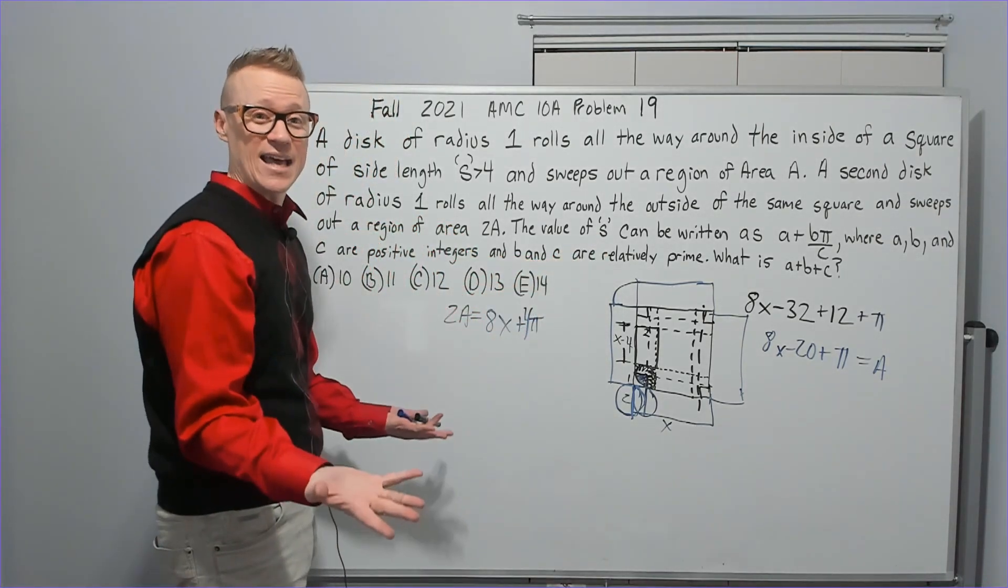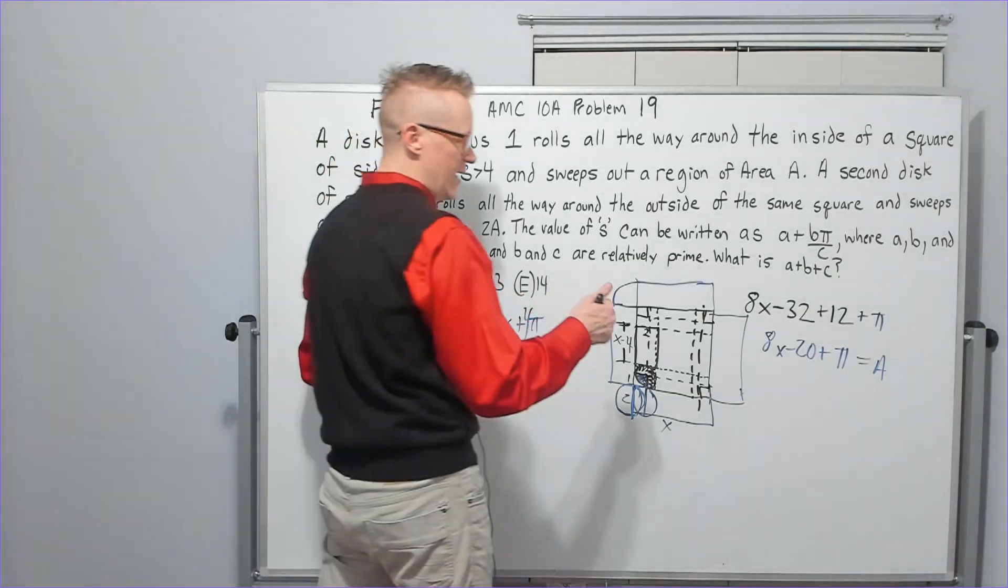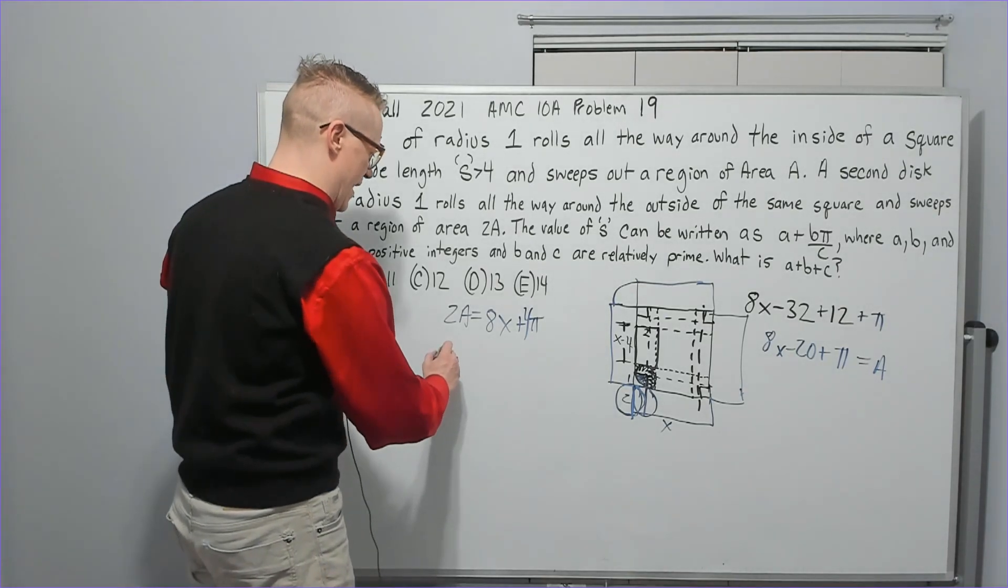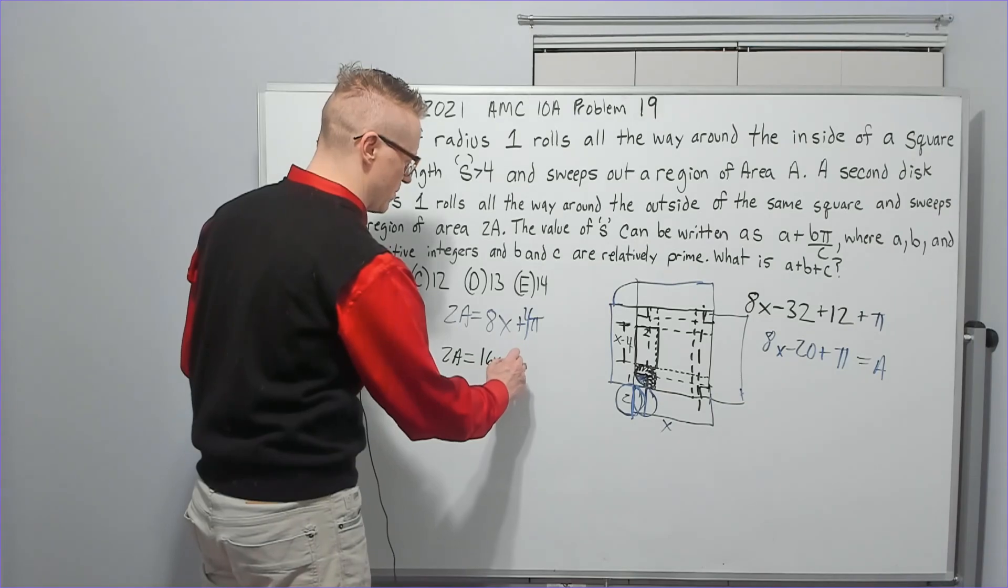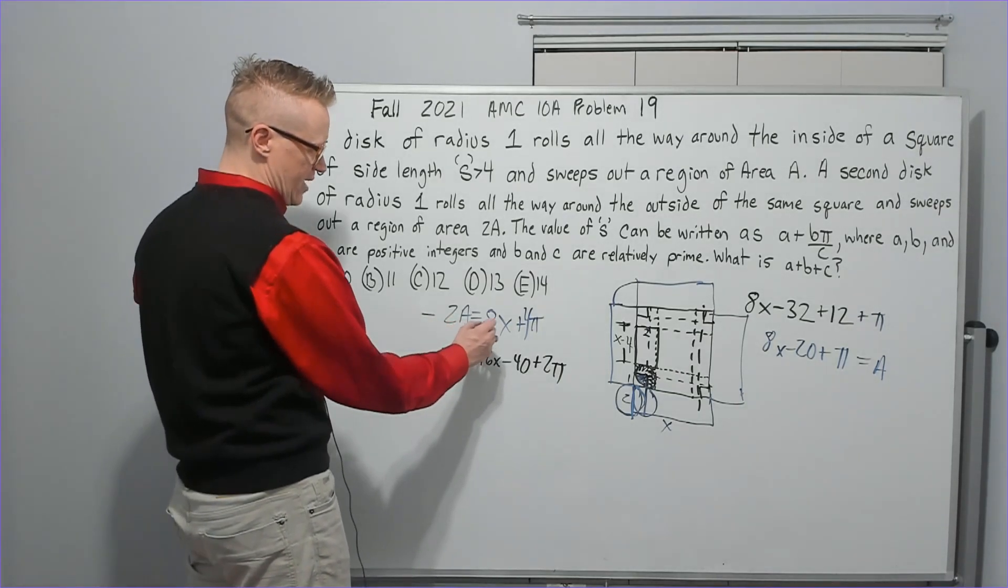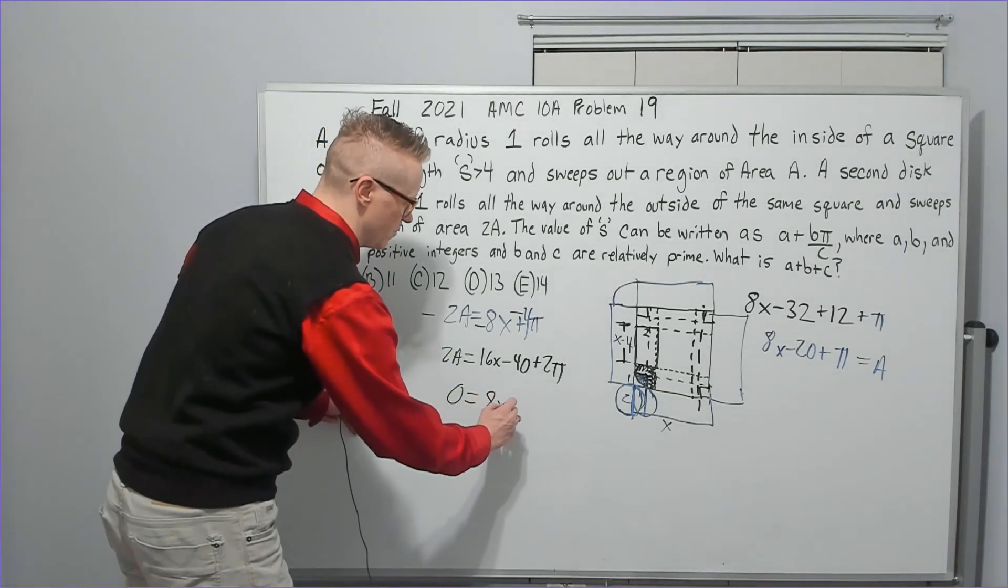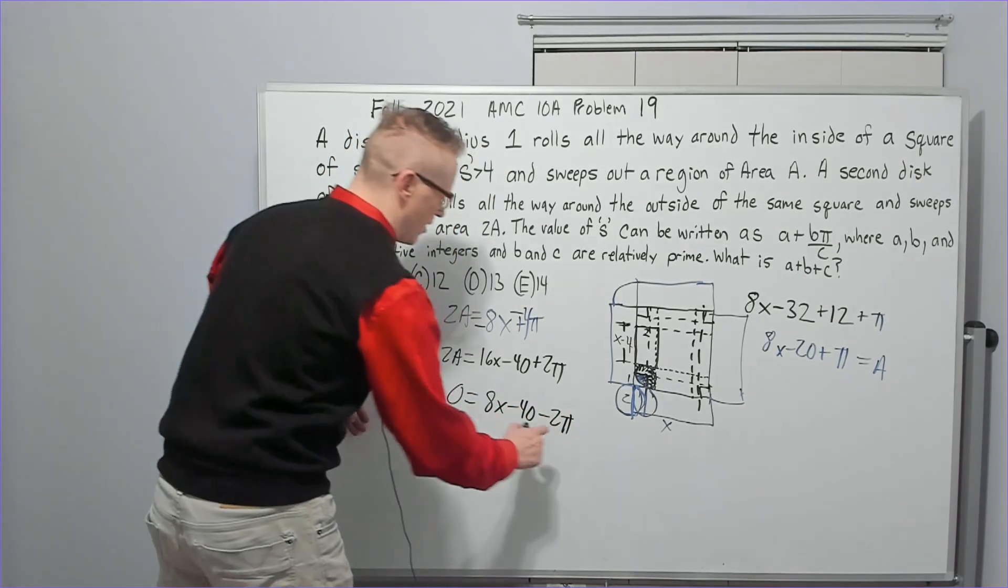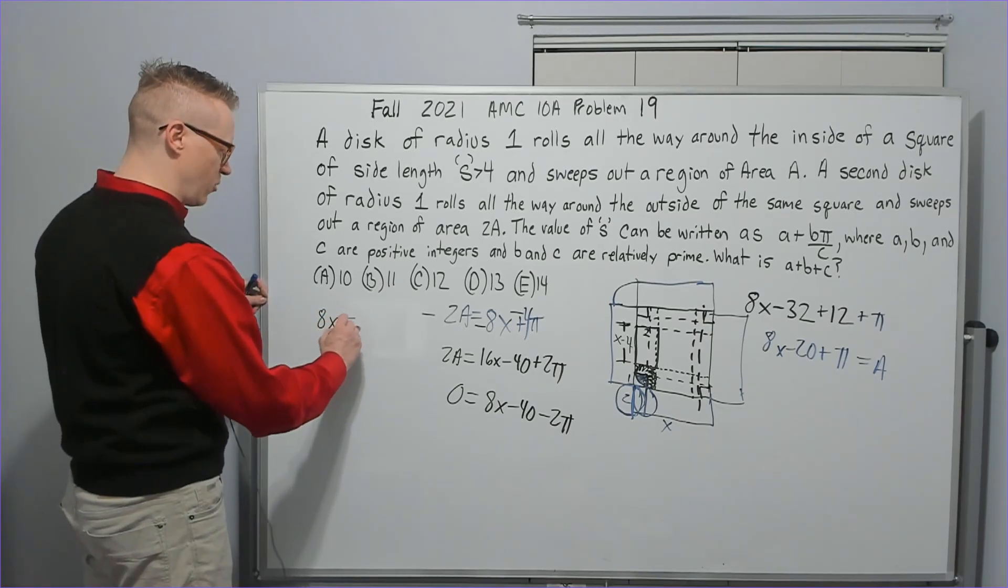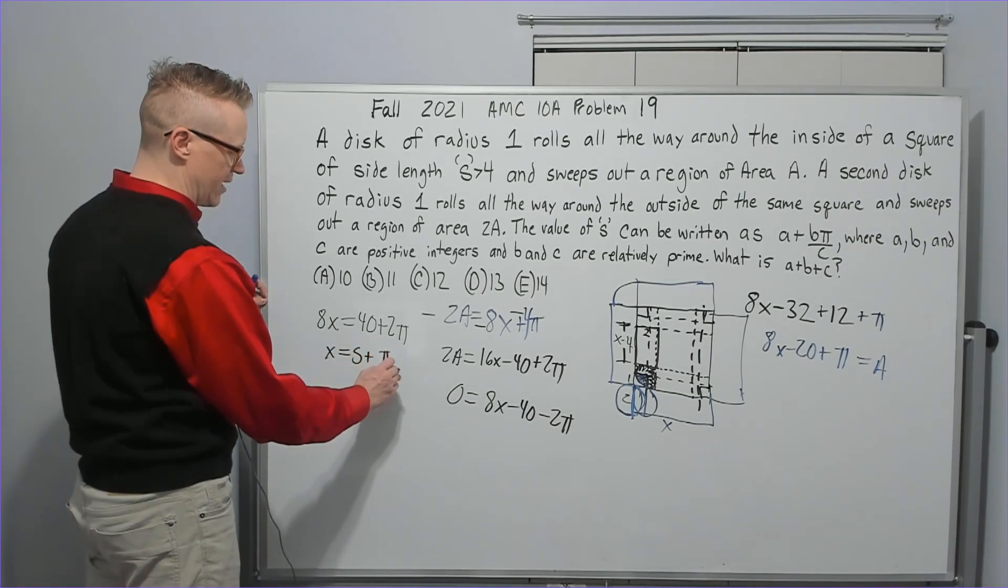All right, so now what do we have to do? We need to get rid of the A because it says the value of s, which I'm calling x again. I don't like s, it causes problems in my calculation. So I just use x. So now I've got A here. I'm going to go ahead and double the A. If I double the A, I'm going to get that 2A is equal to 16x minus 40 plus 2π. Then I'm going to go ahead and do a negative on this one, negative, negative, negative, and add them to get rid of the A so we can solve for x. I will get 0 equals 8x minus 40 minus 2π. All we're doing is adding after you run the negative through. So now I'm going to move these over, I'm going to get 8x equals 40 plus 2π, and I'm going to divide by 8 to get x equals 5 plus π over 4.